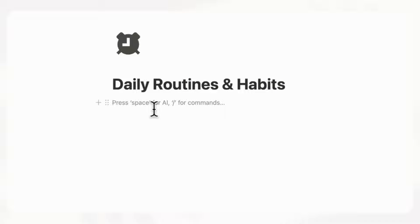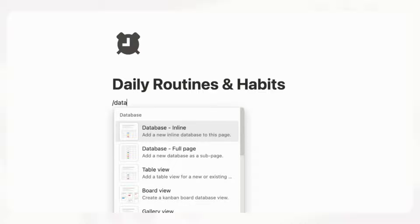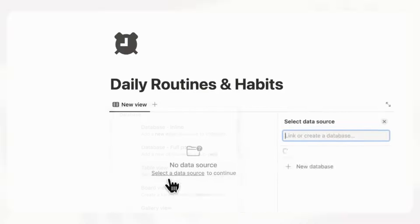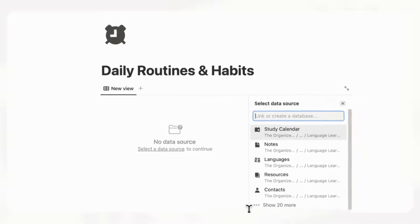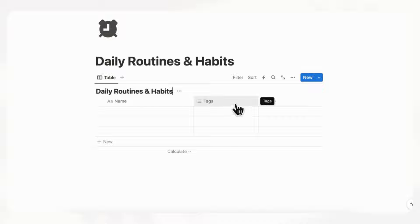First, let's create a table view Notion database by typing slash, then database and table view. We're going to go to "New Database" and title this "Daily Routines and Habits," and then we need to adjust the properties.